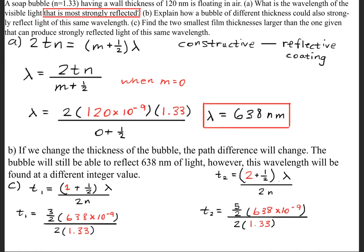So what we'll go ahead and do is, we'll plug in our variables, and we'll get that the thicknesses will be 360 nanometers for the first new one, and for the second new thickness, it'll be 600 nanometers.